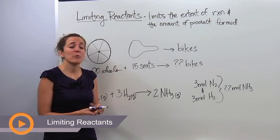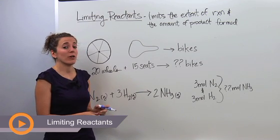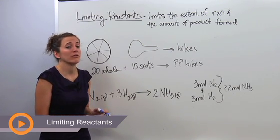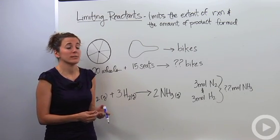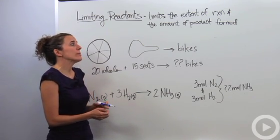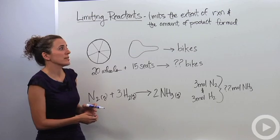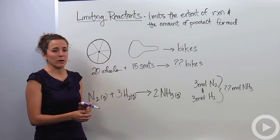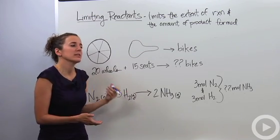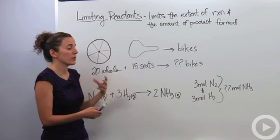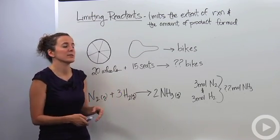In the stoichiometry unit, you're probably going to come across something called limiting reactants, also known as limiting reagents. That limits the extent of a reaction and the amount of product formed. Let's break it into something that makes more tangible sense to us.